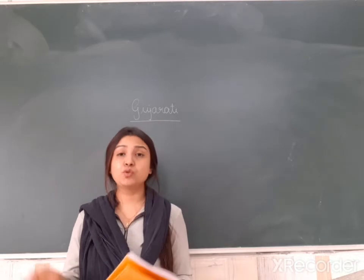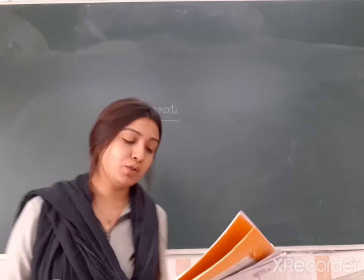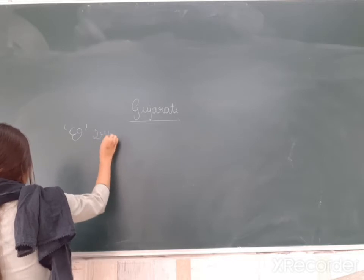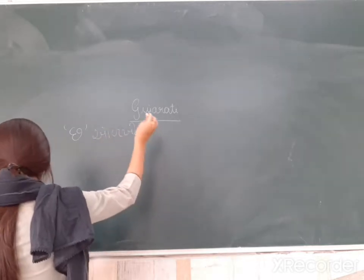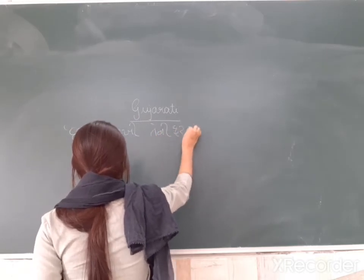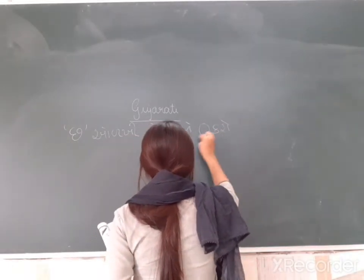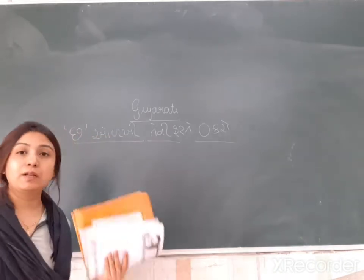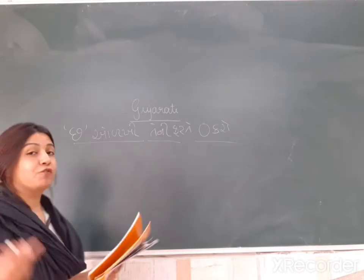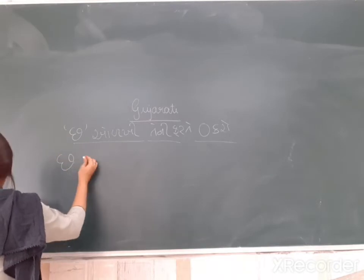So Gujarati, we are going to teach you four, three, four. We will teach you four, three, four students. So four, three, four, three, four, three, four. Now we will teach you four, three, four. So four, three, four, three, four. Now we are going to teach you four, three, four.